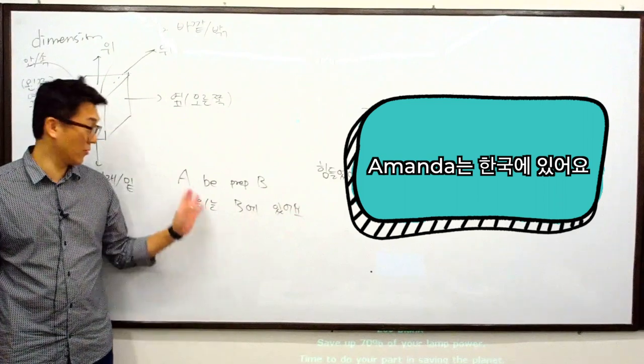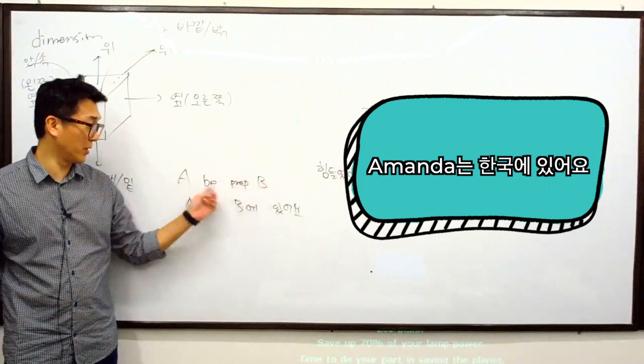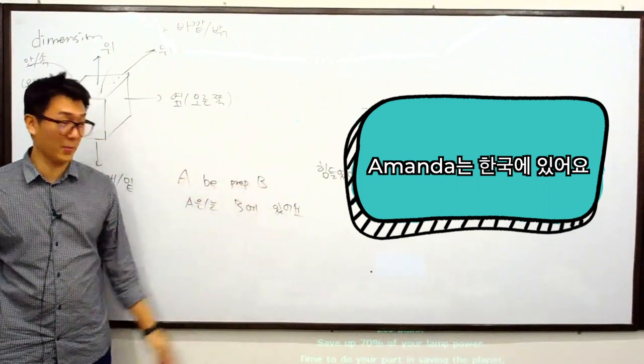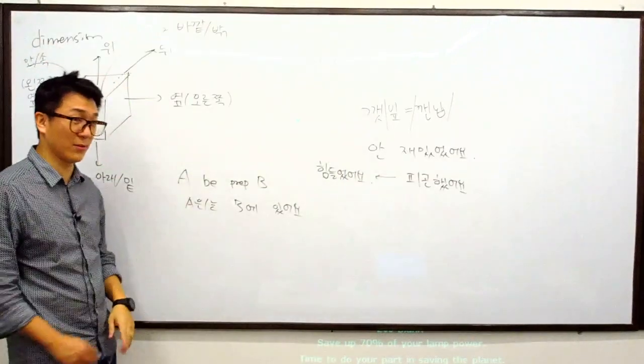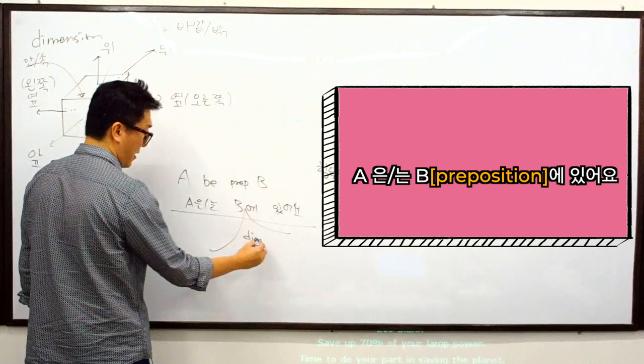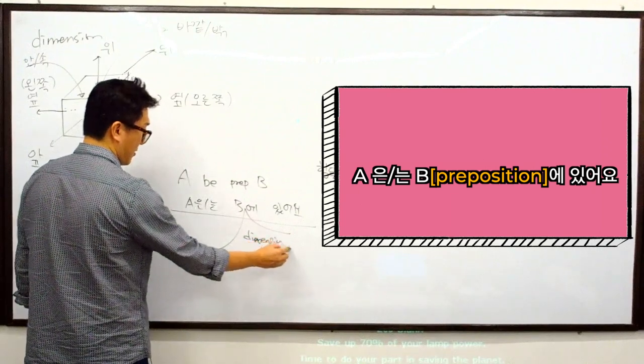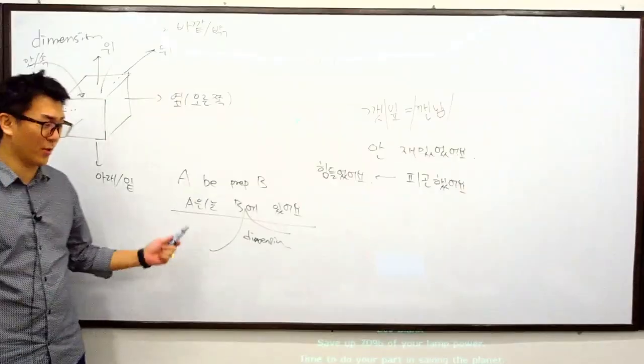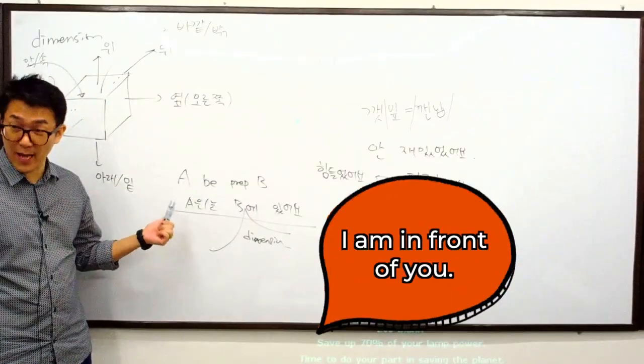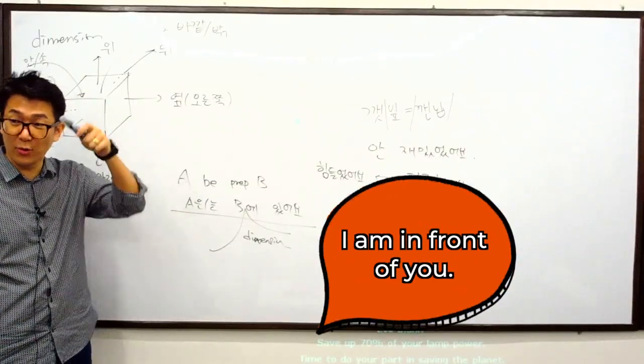Right, this is how you use A은는 B, A B prepositions B. So how do you embed this dimension here? It's adding dimension here, adding dimension in between. How do you say that I am in front of you?